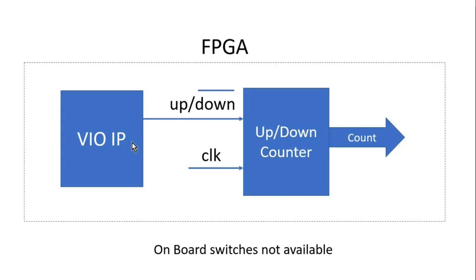After programming the .bit file and .ltx file inside our FPGA, in the Vivado hardware manager we will get one tab to control this VIO IP. Through that tab, we can control the up-down signal going to the up-down counter. For those who want to see a real demonstration of this VIO IP, I will create a separate video and once it is created, I will share its link in the description section.